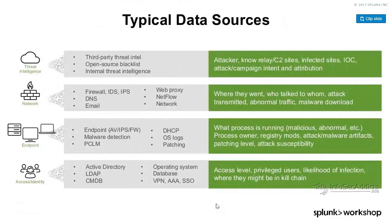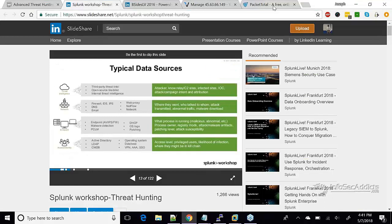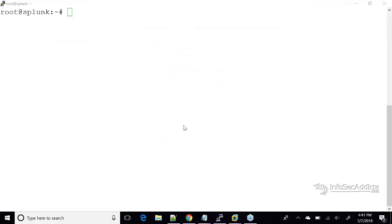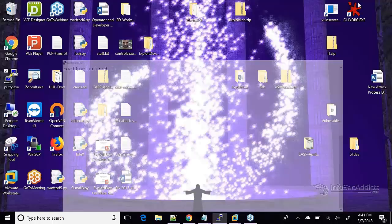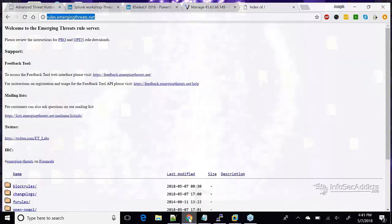Here are your typical data sources — hopefully this gives you a feel of how you can pull data into Splunk. You've got third-party intel, open source blacklists, and internal threat intelligence. This is basically: what IPs do I know are good and bad? Threat intelligence, for the most part, tends to be IPs and hashes — known bad IP addresses, known bad hashes. An example would be rules.emergentthreats.net, which is an example of open source intel.